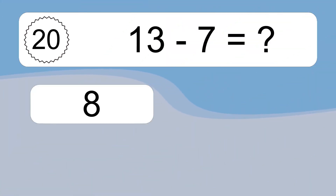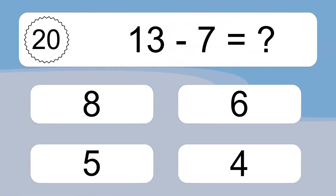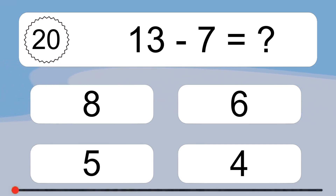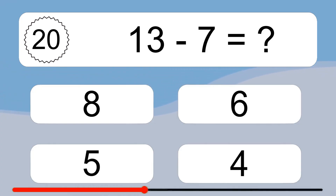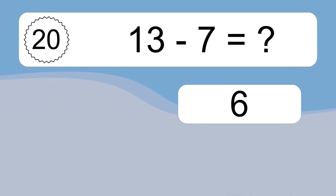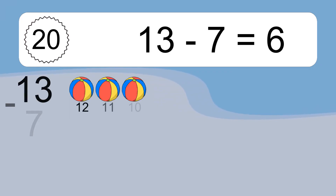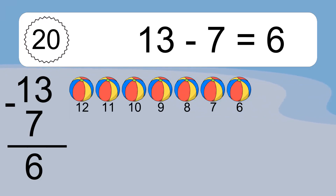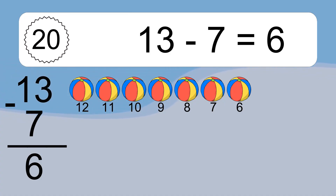13 minus 7 equals what? 13 minus 7 equals 6. Let's count it. 12, 11, 10, 9, 8, 7, 6.